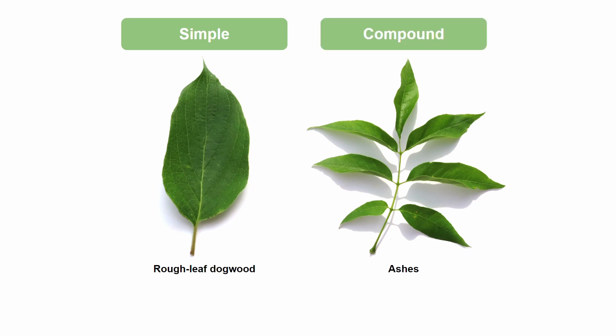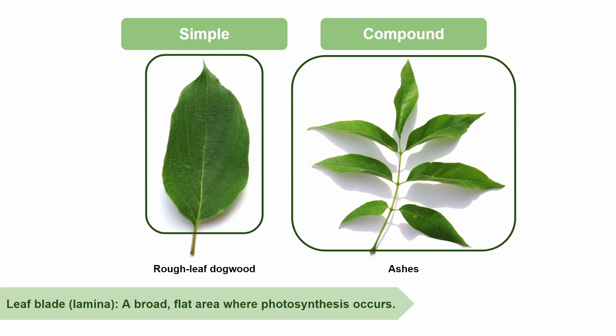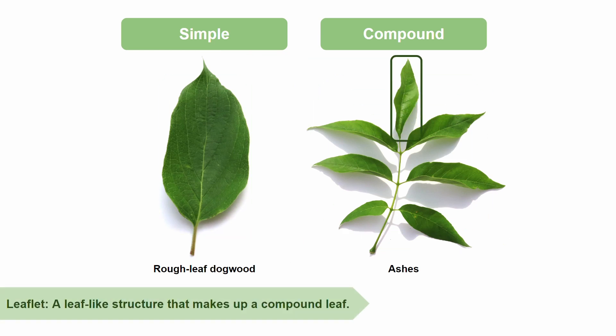What's the difference between a simple and a compound leaf? It all comes down to the leaf blade, or lamina, which is a broad, flat area where photosynthesis occurs. A simple leaf will only have one leaf blade per leaf, however a compound leaf will have multiple small leaflets per leaf blade. If you look at our example compound leaf, it has seven total leaflets. A leaflet itself is a leaf-like structure that makes up a compound leaf.